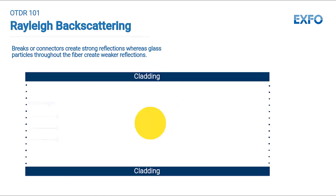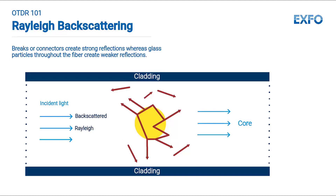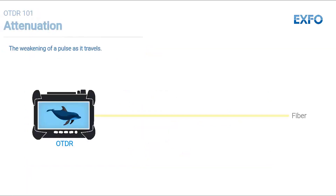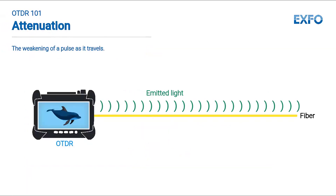Breaks or connectors create potentially strong reflections, but glass particles throughout the fiber also create a little bit of reflection. This is called Rayleigh backscattering, and it is captured by the OTDR. The backscattering reduces as the signal loses energy. The original pulse therefore weakens as it travels — this is called attenuation.